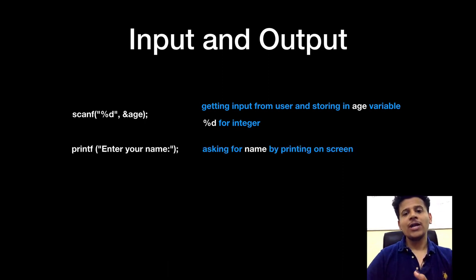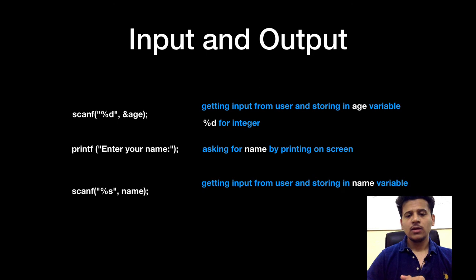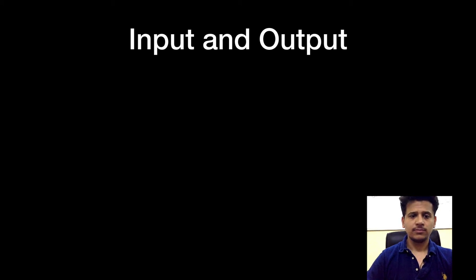Next, we are asking the name by printing enter your name on a screen. Then, we are getting input from a user and storing it in a name variable. We are using %s because the name is a string and we want to save that into a character array.